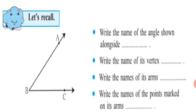But before that, let's recall. You can see the figure here — it's an angle. Write the name of the angle shown alongside. What would be your answer? Yes, Angle ABC. Write the name of its vertex: Point B. Write the name of its arms: Ray BA and Ray BC.